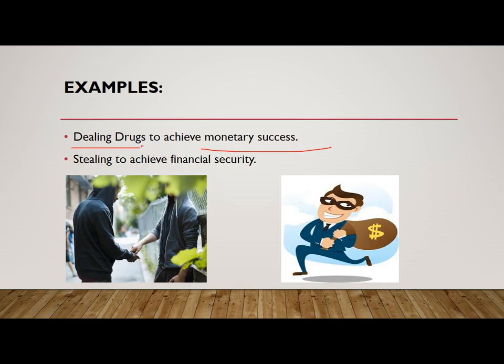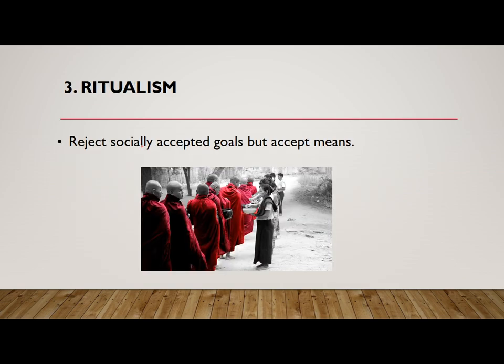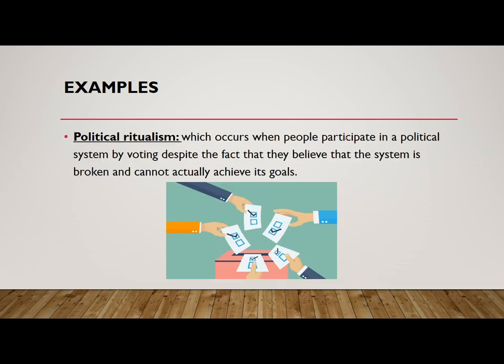In ritualism, a person rejects the socially accepted goals but accepts the means — they are just going through the motions like any other daily ritual. An example is political ritualism, where people participate in the political system by voting despite believing the system is broken and cannot actually achieve its goals. They accept the socially accepted means of voting but do not believe in the system.